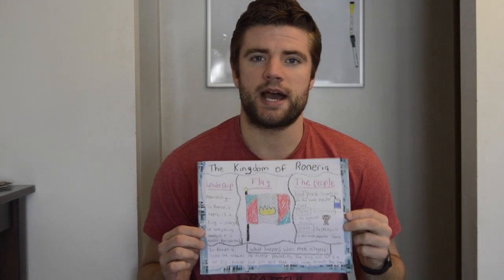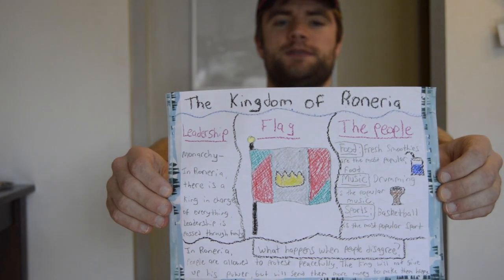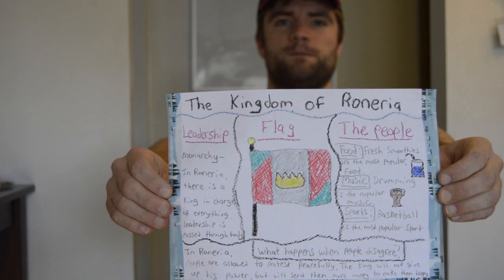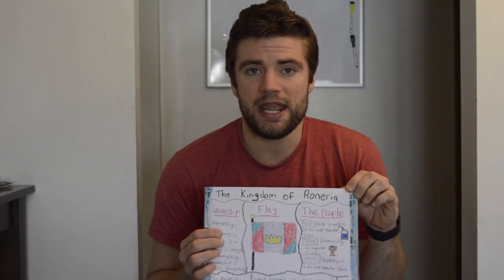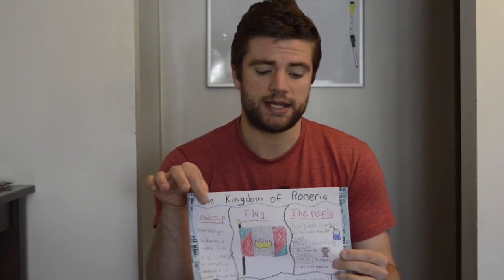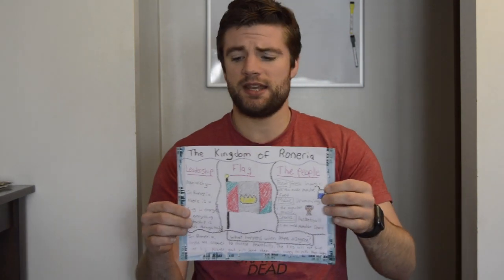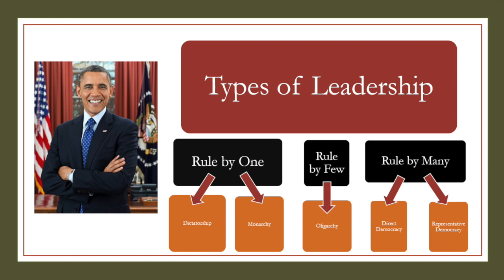Let's go over the different parts of our country project one more time. It's okay if you can't see this picture exactly — I will say things out loud so you can understand. The first part is we just have to come up with a name for our country. This can be any name that you want — just pick a name and write it up on top. The next thing is: what kind of leadership does your country have? Basically you want to decide whether you want one person to be in charge, a few people to be in charge, or you want most people to be in charge.